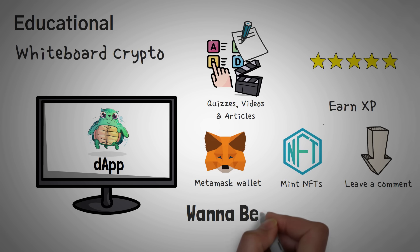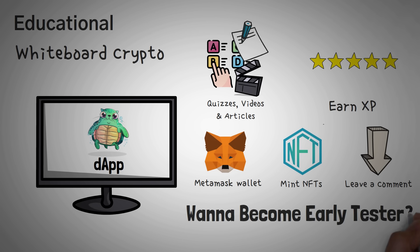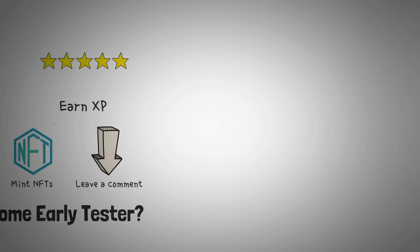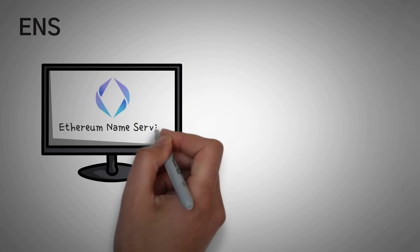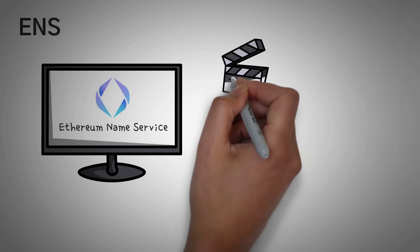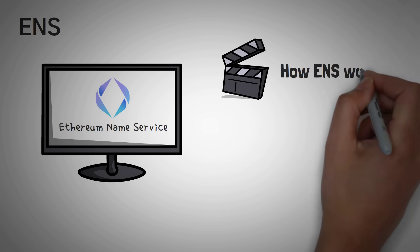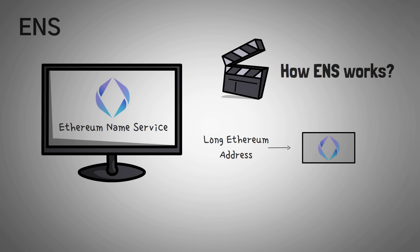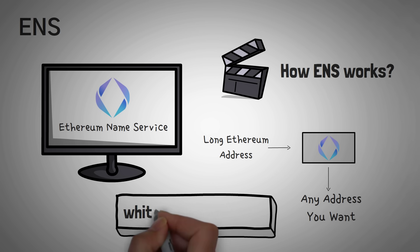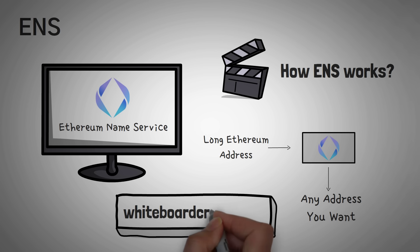One last dApp that doesn't really fit into any of these categories is ENS — Ethereum Name Service. We actually have an entire video explaining how it works. In short, ENS turns those long Ethereum addresses into any address that you want. For example, we actually own whiteboardcrypto.eth, so if you send any coins or tokens there, it'll go to our wallet.